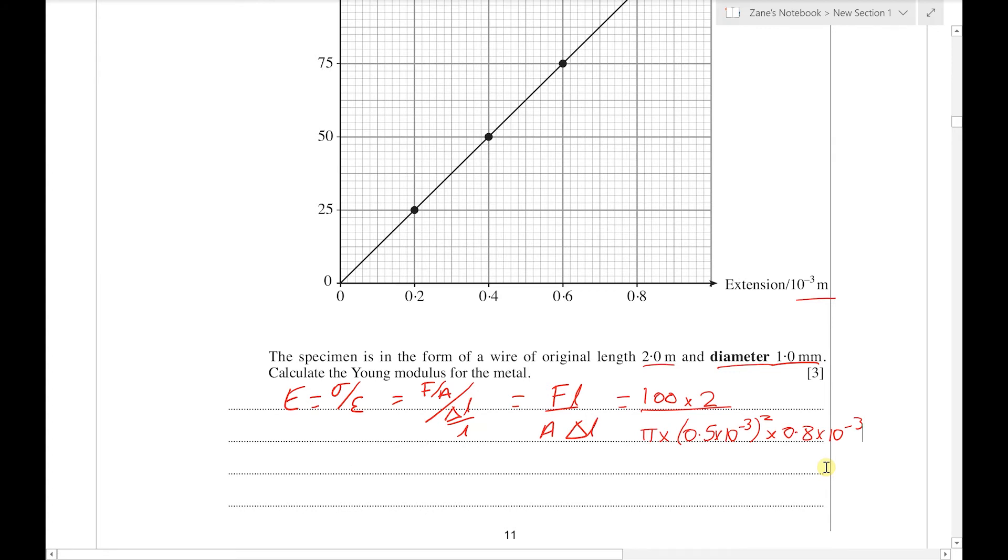Now as we're evaluating this, it's always worth remembering that when we're finding the Young modulus for a metal, we're typically expecting a value in the region of a few hundred gigapascals. So when you're typing in the numbers, make sure that you carefully put in the millimeters and things, and if you don't end up with an answer of approximately...